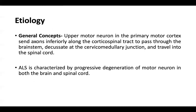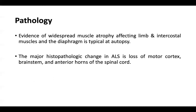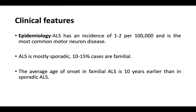ALS is characterized by progressive degeneration of motor neurons in both the brain and spinal cord. Regarding pathology, evidence of widespread muscle atrophy affecting limb and intercostal muscles and the diaphragm is typical at autopsy. The major pathological change in ALS is loss of motor cortex, brain stem, and anterior horns of the spinal cord.